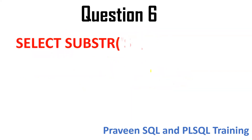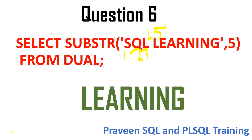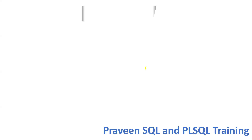The sixth question is about SUBSTR. SUBSTR is used when you want to extract some part of a string. Counting positions: 1, 2, 3, 4, fifth. The third parameter is optional, so the output will be from the fifth position extracting all remaining characters — the result would be something like 'learn'. If you put 5 comma 1, output will be one character; if you put 5 comma 2, two characters; if no third parameter, it extracts everything from the fifth position onward.